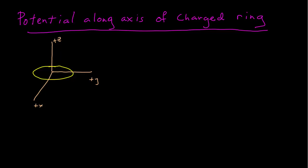In this example, we start with a charged ring, and we want to find the electric potential along the axis of that charged ring and then use that to find the electric field.